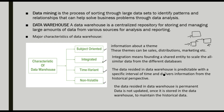Next is time-variant. The data residing in a data warehouse is predictable with a specific interval of time and delivers information from a historical perspective. We store data from previous years and specific time periods for historical analysis. We keep both the previous year's data and current data so we can analyze and make future decisions.